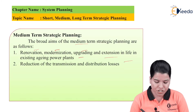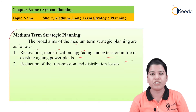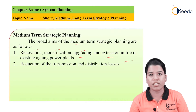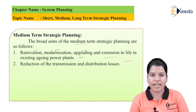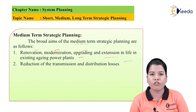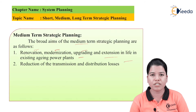Next aim is the reduction in transmission and distribution losses. Whenever energy is transmitted and distributed from the generating system to the consumer, it is said that if 1.5 units are transmitted, then only 1 unit is received. So there are always certain losses in transmission and distribution, and reduction of these losses is very important.